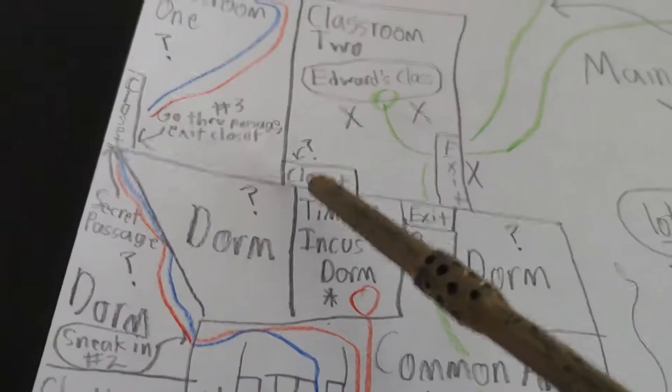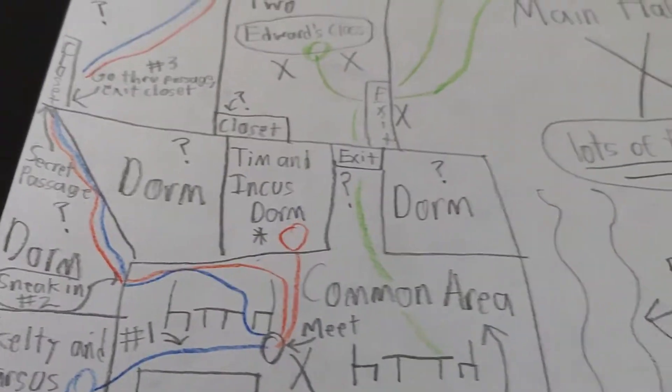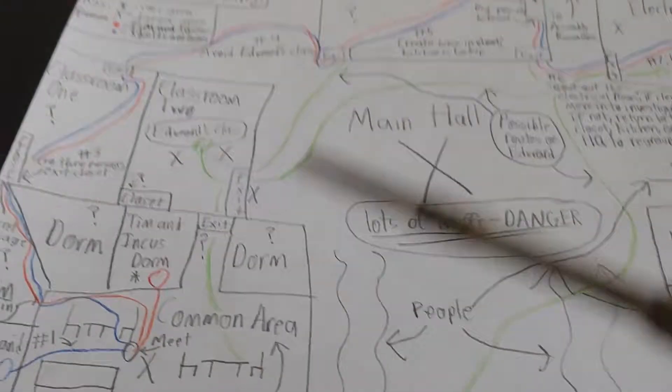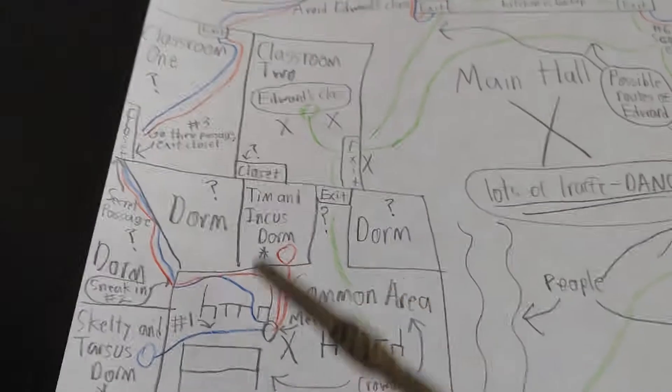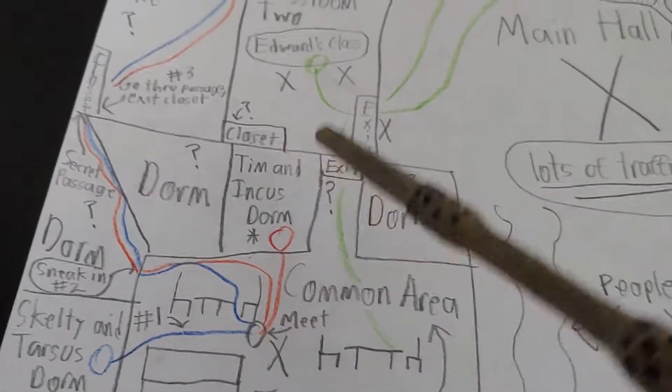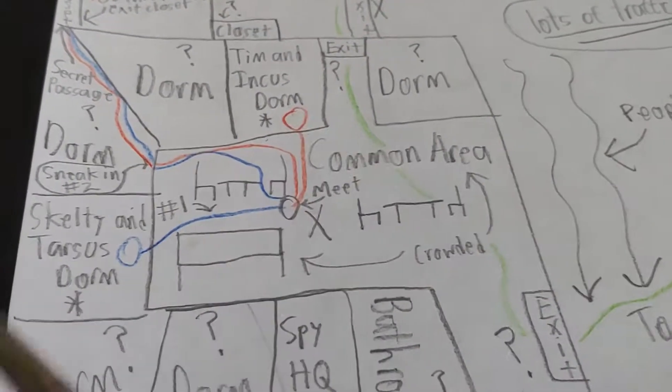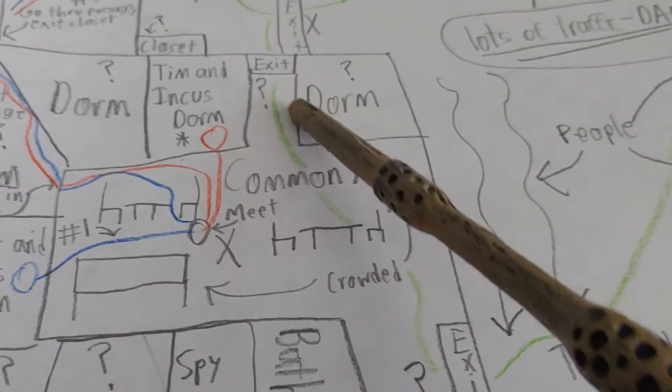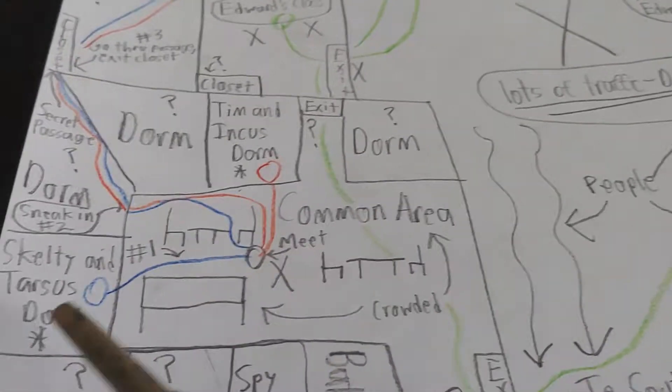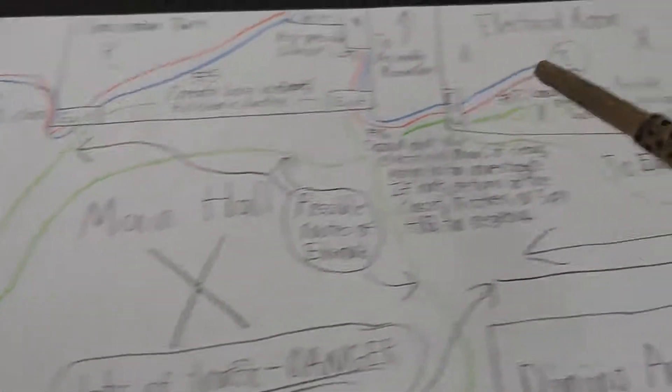We may have this brilliant plan, we may have everything we possibly could predict predicted, everything charted out, but the one thing we cannot determine is specific times of when people will be where and what they will be doing and how long they will be doing it. Tim and Incus or Tarsus and I could come out of our dorm and Edward could be crossing through right in the middle of it, or he could never leave his classroom. Maybe we could get there and Salty might not even be there.